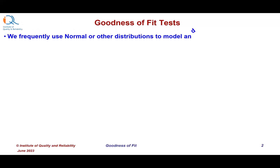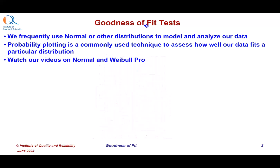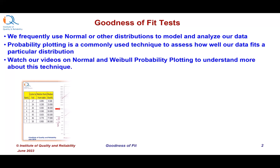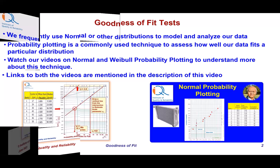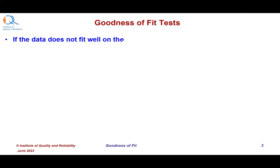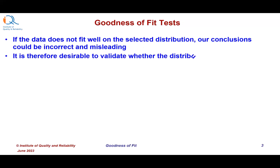We frequently use normal or other distributions to model and analyze our data. Probability plotting is a commonly used technique to assess how well our data fits a particular distribution. Watch our videos on normal and viable probability plotting to understand more about this technique. Links to both the videos are mentioned in the description. If the data does not fit well on the selected distribution, our conclusions could be incorrect and misleading. It is therefore desirable to validate whether the distribution is a reasonable fit on our data.